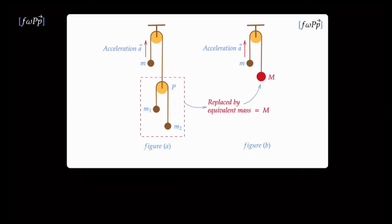The straightforward way to solve this is to write the F=ma equations for all the masses and then solve them to figure out what the acceleration is going to be. Even for the equivalent mass, you can write the F=ma equations, compare the two expressions, and you would get the effective mass m.